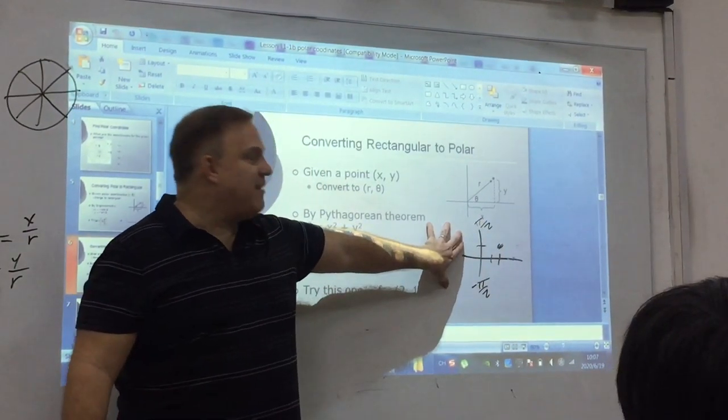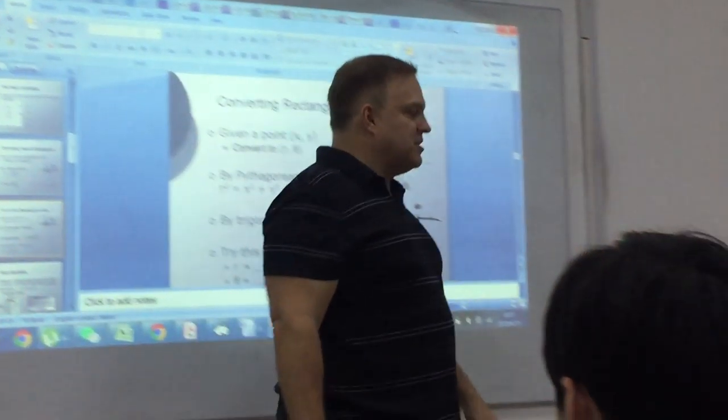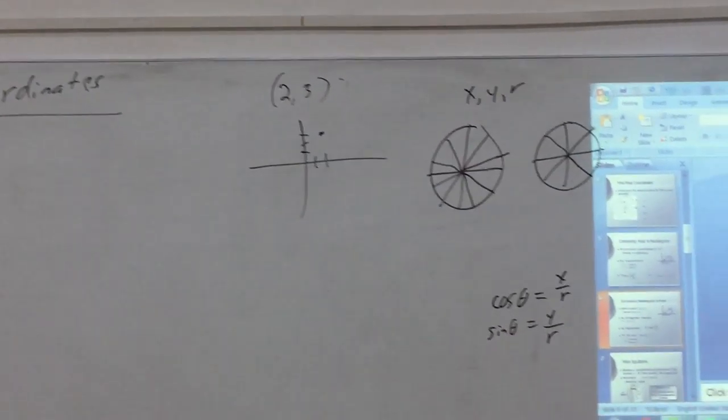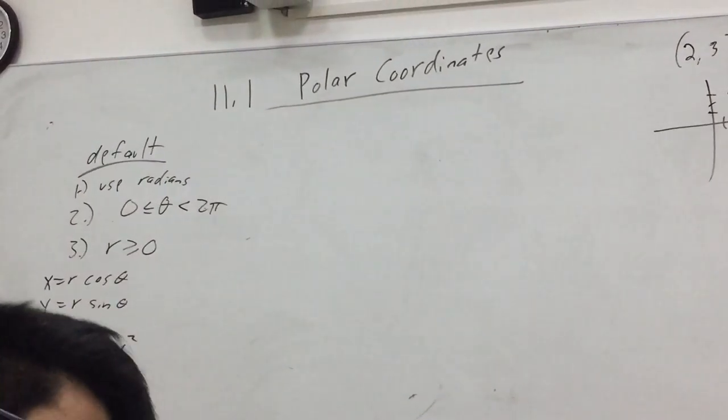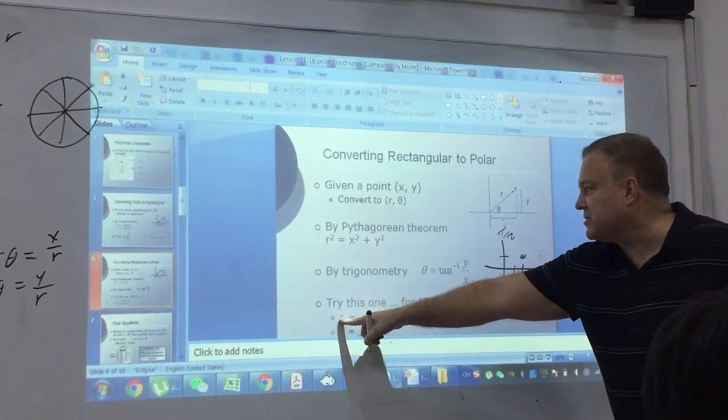But obviously you could have an angle over here. So the best way to avoid that problem is just to draw a picture, and then if you write tan(θ) = y/x, you already know how to solve that for all quadrants. Let's go ahead and do this.